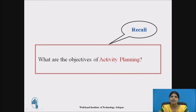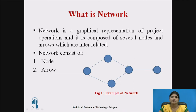Pause the video for a while and think about what are the objectives of activity planning. Now, what is a network? Here the circle represents the node, and two nodes are connected with the help of arrows. A network is nothing but a graphical representation of project operations, composed of several nodes and arrows which are interrelated. A network consists of two elements: nodes and arrows.